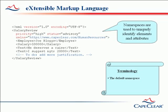The xmlns attribute, shown here, sets the default namespace. This sets the namespace for the element it is attached to, and also for all child elements. Child elements are, of course, free to declare their own default namespace, overriding the one they inherit from their parent.